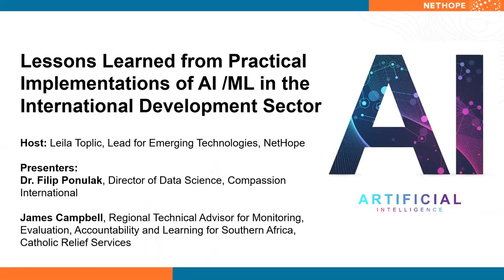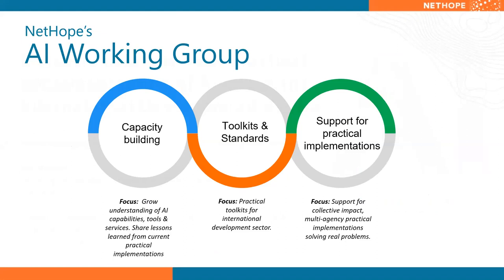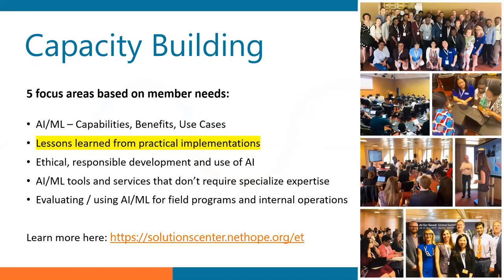For over a year now, NetHope has been leading an emerging technologies initiative and an AI working group. We'll share the link in the chat window. The goal is to grow nonprofits' internal expertise and capacity to evaluate, develop, procure, and use emerging technologies like AI and machine learning in their work. We focus on three work streams: capacity building, toolkits and standards — in fact we'll be releasing one of the toolkits this week — and supporting practical implementations through collaboration with our private sector and academic institution partners.